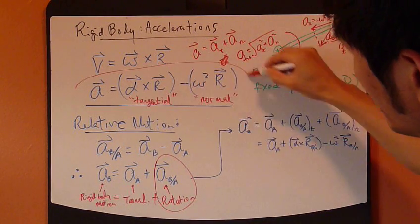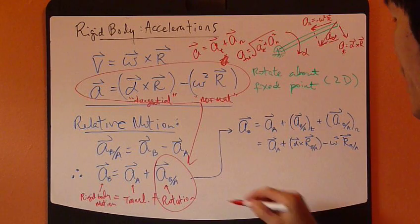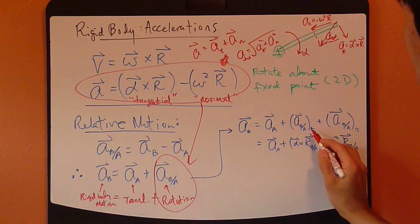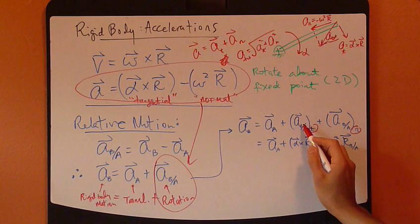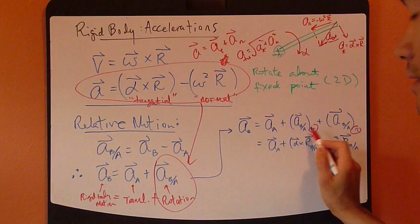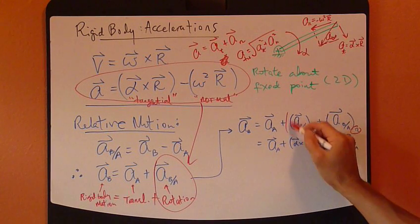By definition, we're going to expand this into two terms, tangent and normal component. So acceleration of B relative to A, tangent component, plus normal component.